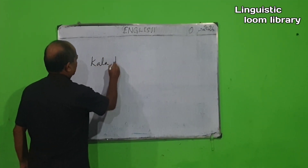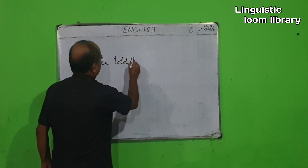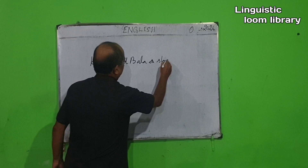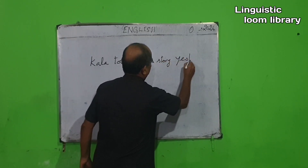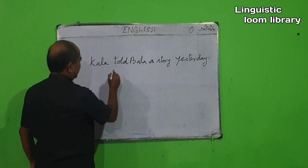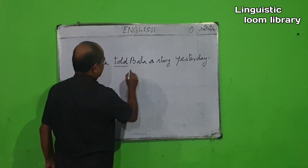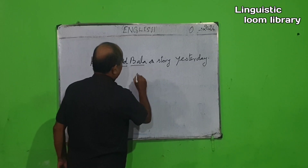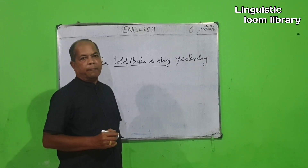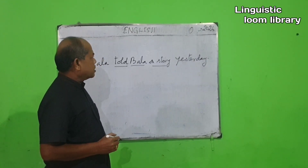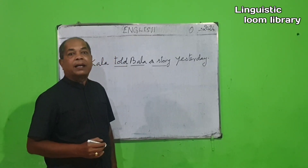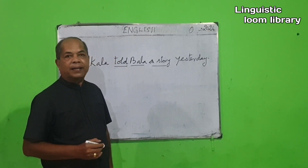Let me illustrate with an example: Kala told Bala a story yesterday. Here, 'told' is the verb. Next to the verb there comes Bala and a story — two nouns consecutively. If two nouns or two pronouns consecutively come after your verb, there comes the question of direct and indirect object.